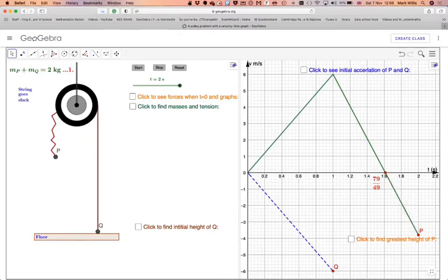On a velocity time graph acceleration is given by the slope. Particle Q just goes downwards. And we will be asking some questions. So if we just reset that